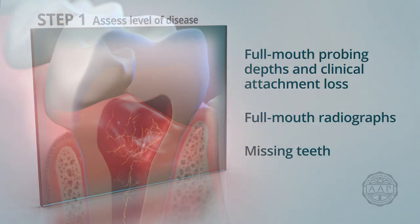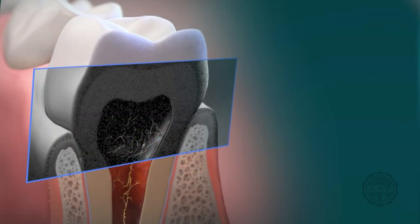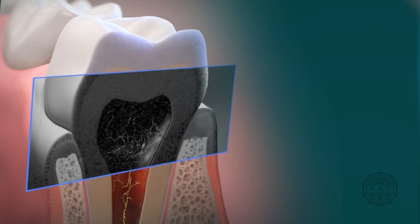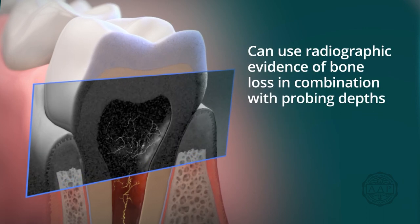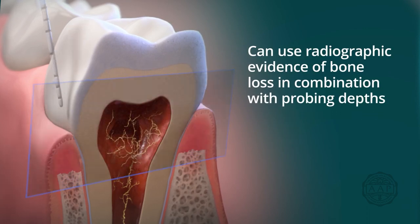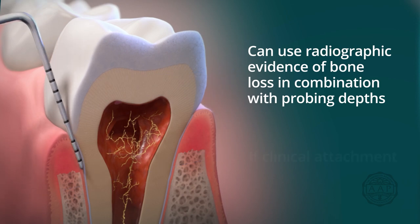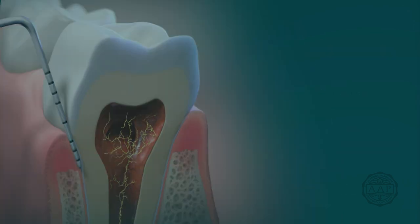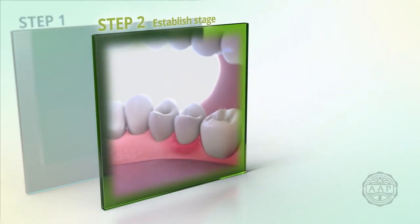Although clinical attachment loss is the most relevant clinical parameter in measuring the severity of periodontitis, radiographic evidence of bone loss in combination with probing depths may be used if clinical attachment loss is unavailable. Step 2: Establish the stage.